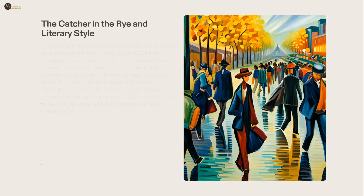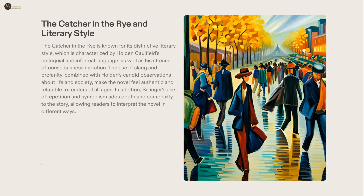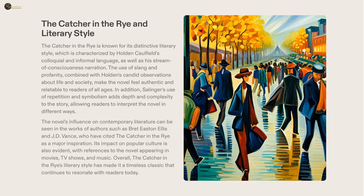Salinger's acclaimed novel, The Catcher in the Rye, has been remarkably captivating readers since its release in 1951. Its literary style, which includes Holden Caulfield's utilization of colloquial dialogue and stream of consciousness narration, has allowed the novel to remain a classic that has stood the test of time. Aside from the dialogue, the novel has also included repetition and symbolism, further augmenting the opportunity for readers to interpret the story in creative ways. Its influence on contemporary literature and popular culture can be seen throughout many authors' works and in various media references.